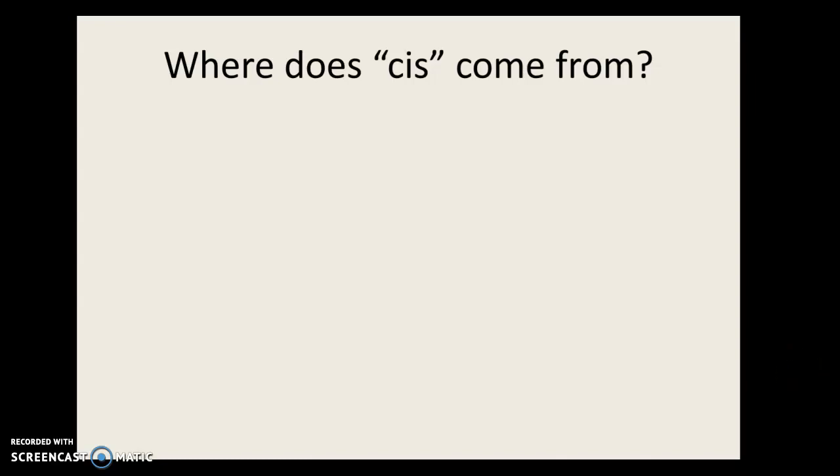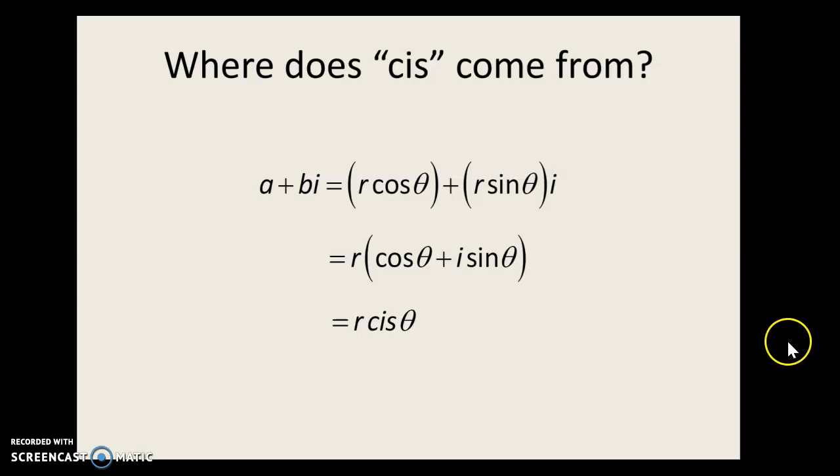It's actually just an amalgamation of things you already know. So here's a conversion from rectangular to polar. a + bi is r cosine θ plus r sine θ times i. So I'm going to rearrange that a little bit, pull the r out, and I've also moved the i in front of the sine. And that's where cis comes from. It's the c from cosine, the i, and then the s from sine. So cis just stands for cosine, i, and sine. Pretty straightforward.